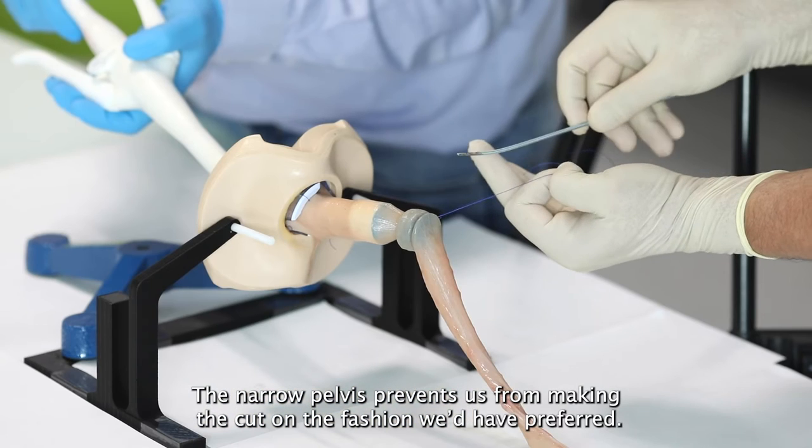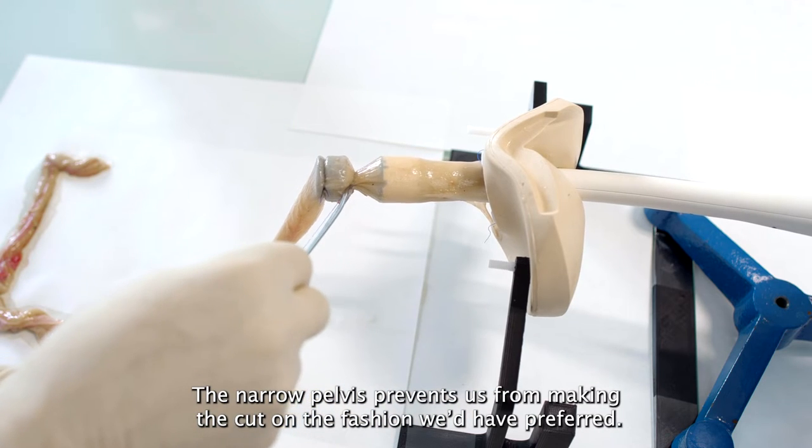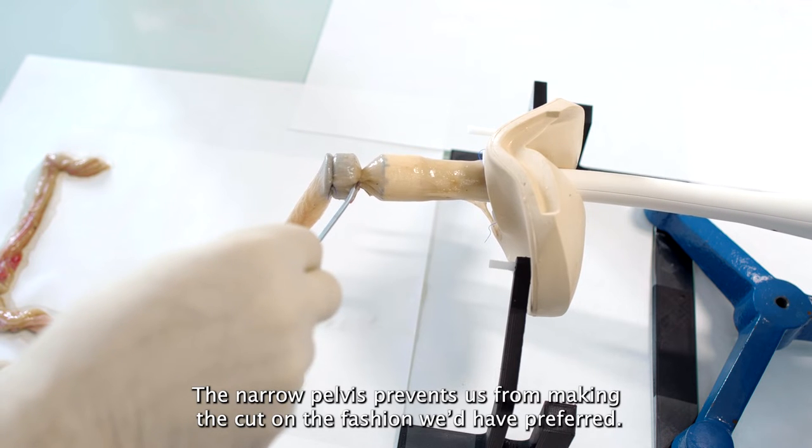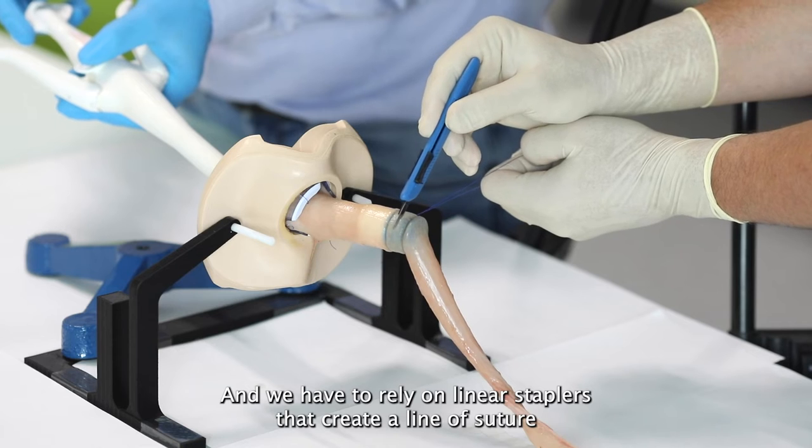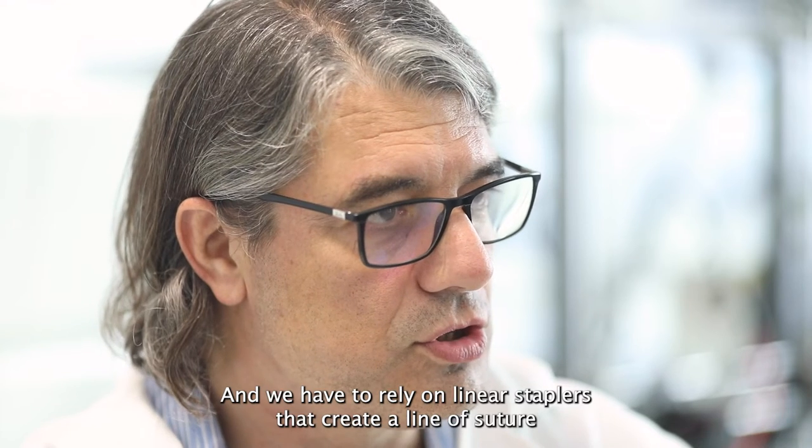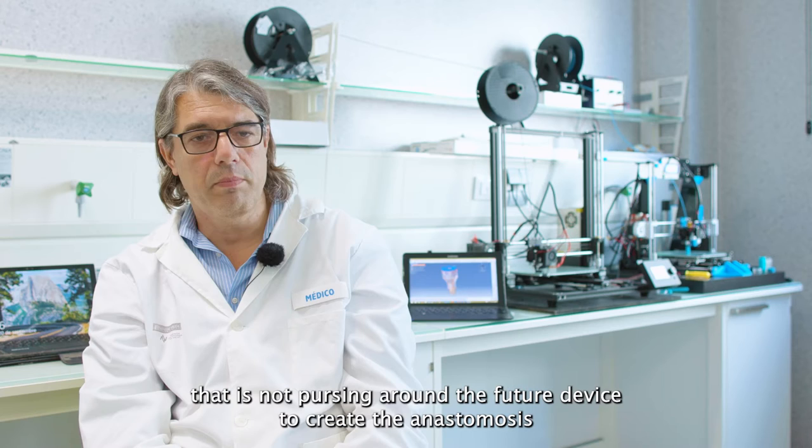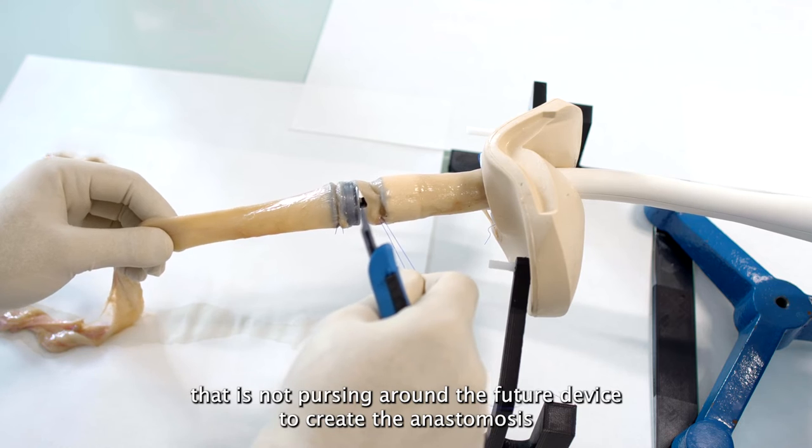The narrow pelvis prevents us from making the cut in the fashion we would have preferred, and we have to rely on linear staplers that create a line of suture that is not positioned around the future device to create the anastomosis.